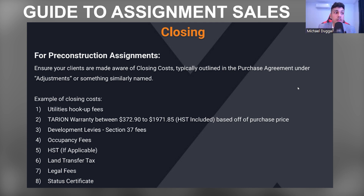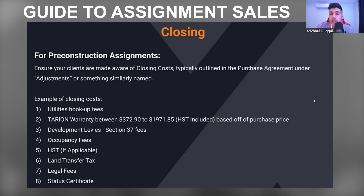Some of the fees that could be included are utility hookup fees, carry-on development levies, occupancy fees, HST, land transfer tax, legal fees, and status certificate. With respect to development charges, you can often put a cap in the schedule — for example, capping fees at $20,000 or $30,000. In addition, there is commonly an assignment fee just to assign the property — sometimes $10,000, $20,000 is pretty common — and that would be found in the original agreement of purchase and sale between the assignor and the original seller. So find out: is there a fee, can the assignment actually take place, and make sure you are aware of any other rules that would prevent you from going ahead with the assignment.